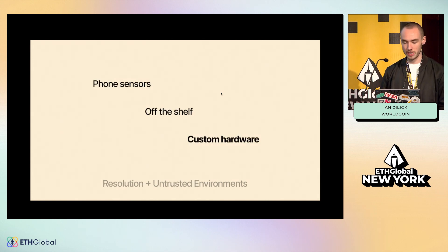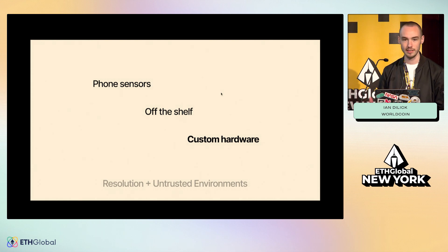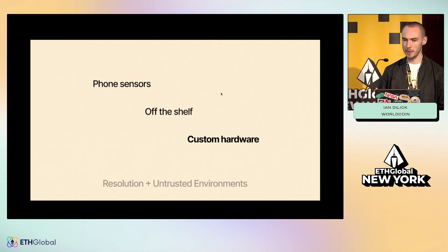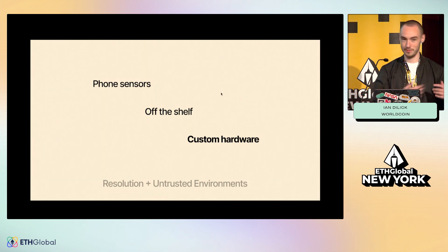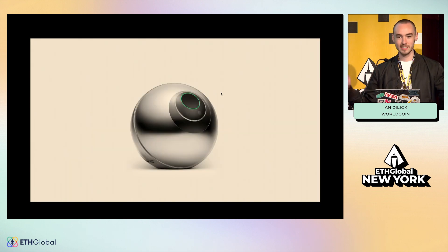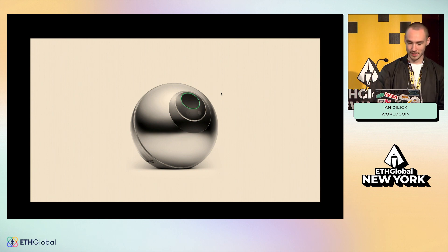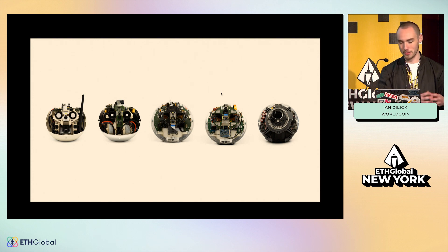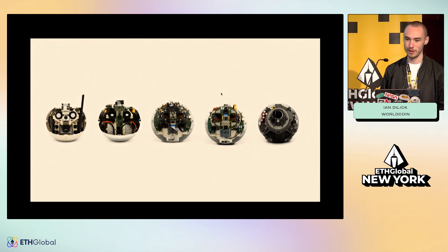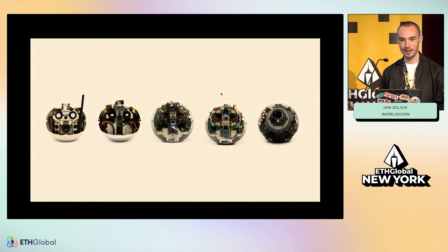When it comes to how we do those iris scans, we looked at using users' phones, but the resolution on the cameras isn't high enough to capture the level of entropy needed to distinguish billions of people. We looked at off-the-shelf hardware like what they use for Clear at airports in the US, but it's really expensive, and it's used for one-to-one verification — are you the same person as your ID — versus are you unique from billions of other people. So we settled on building custom hardware. That hardware is the Orb. You might have seen them at our booth. The Orb has been in development since early 2020, gone through lots of different revisions, and the hardware is 95% open source. We haven't open sourced the tamper-resistance and security hardware, but all the rest you can look at on our GitHub.